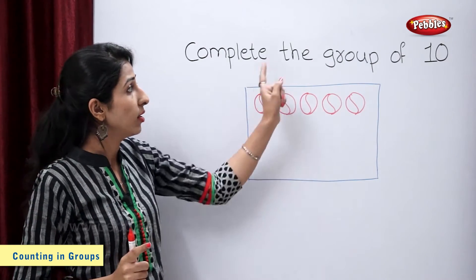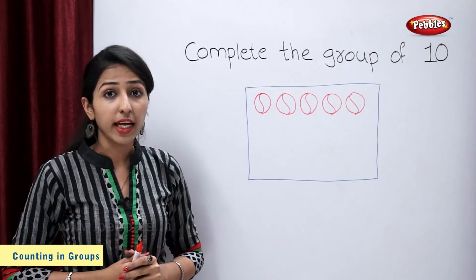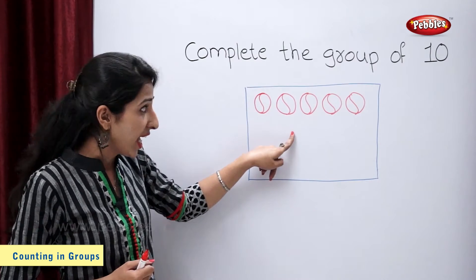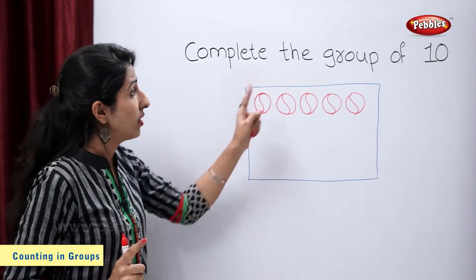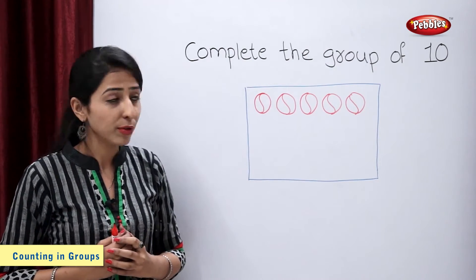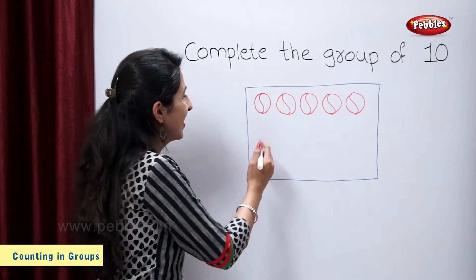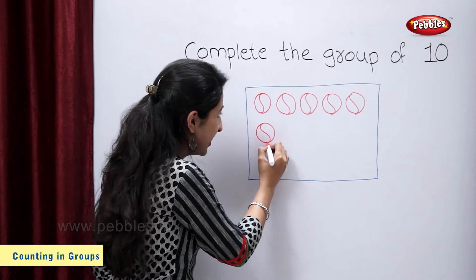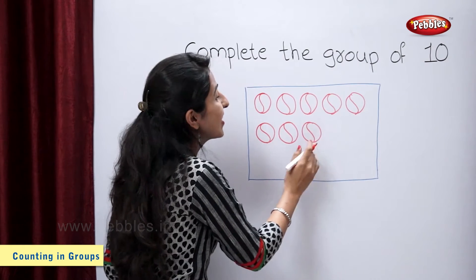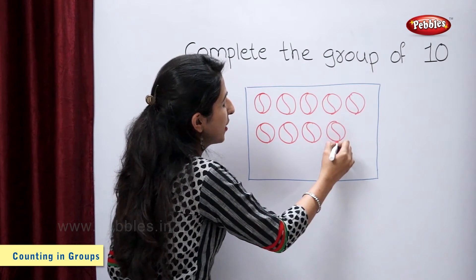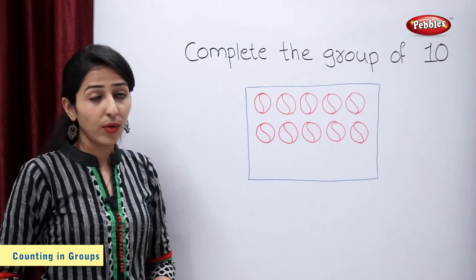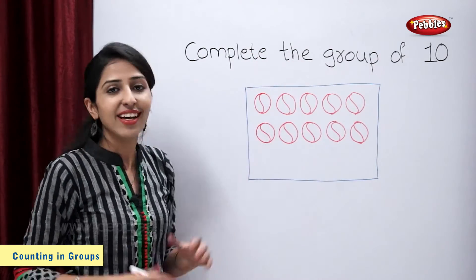And we have to complete the group of 10. So tell me students, how many balls are missing? We have 5 balls and we have to complete the group of 10, so there are 5 balls missing. I have to draw 5 more balls: 1, 2, 3, 4 and 5. So the group of 10 is complete.